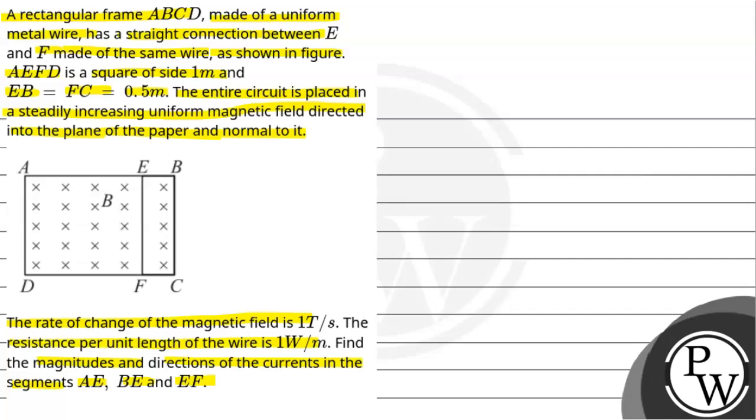Looking at the diagram, we have a rectangular frame AB and CD made of metallic wire. A straight wire is connected between E and F so that AEFD is a square with length 1 meter. EB is 0.5 meter. This is placed in a steadily increasing uniform magnetic field directed into the plane. We need to find the magnitudes and directions of currents. Let's start with the solution. But before that, let's talk about the key concept we're going to use here.